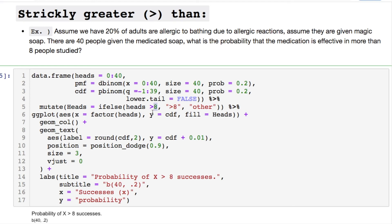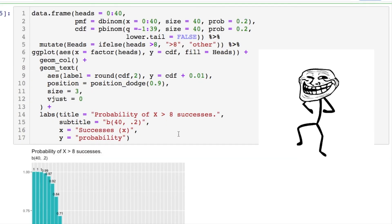So let's assume that we have 20 percent of adults that are allergic to bathing due to allergic reactions, assuming they're given magic soap. There are 40 people given the medicated soap. What is the probability that the medication is effective in more than eight people study? Because you know sometimes people just don't like showering and they need magic soap. Of course I'm joking. Or am I?